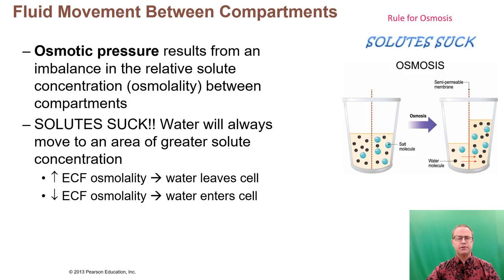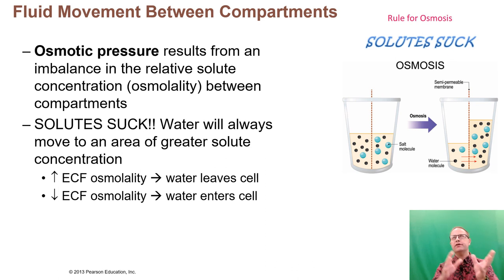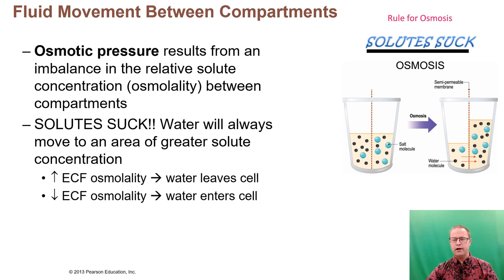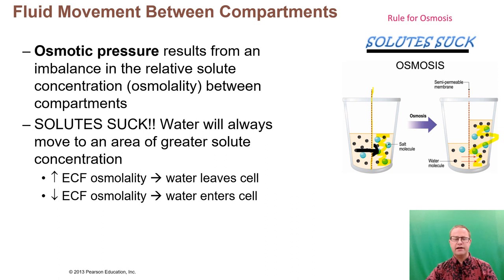Osmotic pressure relates to osmosis — the movement of water across a semipermeable membrane. Water always goes to the area of greater solute concentration. Simply put: solutes suck. In a water glass divided by a semipermeable membrane that lets water through but not salt, if there's more salt on the right side, water gets pulled from the left to the right. Wherever there's more solute, that's where the water goes.